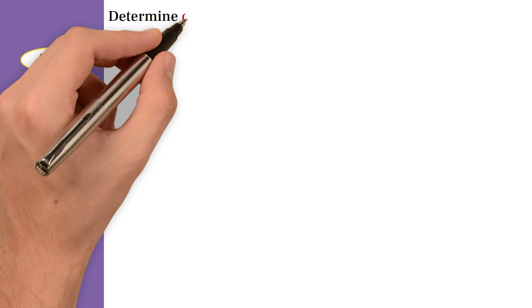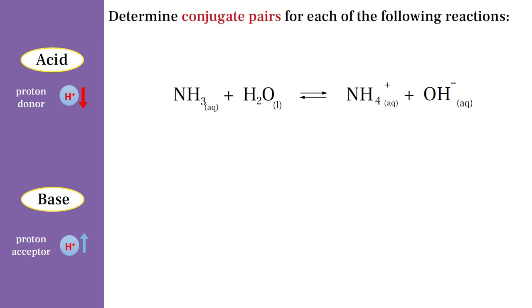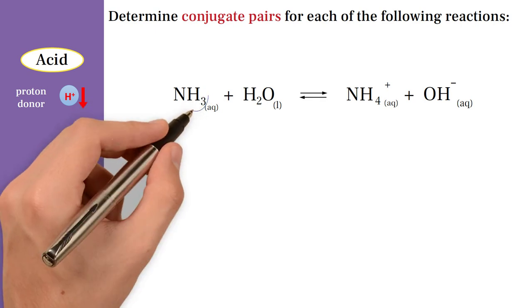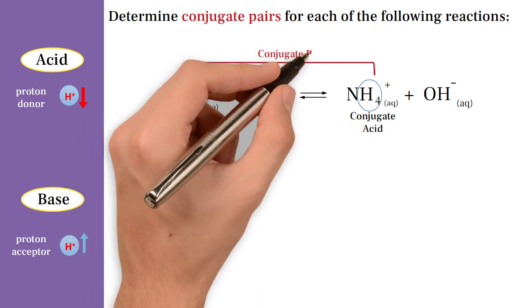Let's determine conjugate pairs for each of the following reactions together. Our first step, as mentioned in the first part, is to examine the equation and notice the changes in it. Since NH3 is the substance in which the number of hydrogen atoms increases, it is a proton acceptor, which means NH3 is the base in the forward reaction. While the positive ammonium ion is the acid in the reverse reaction, and is called the conjugate acid. Therefore, ammonia and ammonium ion are a conjugate pair of acid and base.